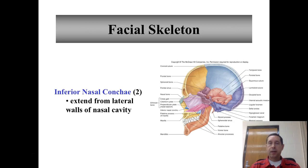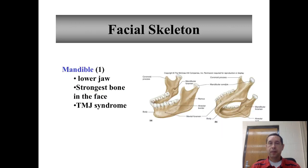You have a projection from the wall of the nasal cavity called the inferior nasal conchae. The middle and superior conchae are part of the ethmoid bone, and there are two of those, one on each side. The mandible is the lower jaw, the only movable bone in the face, and the strongest bone in the face. Sometimes people have a problem where the mandible forms a joint with the temporal bone that doesn't fit quite right, called Temporomandibular Joint Disorder, or TMJ, which can cause the jaw to lock in place and cause other problems.